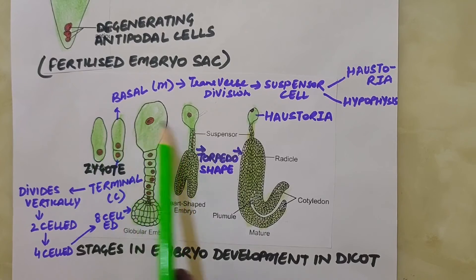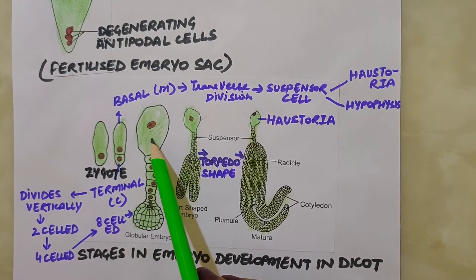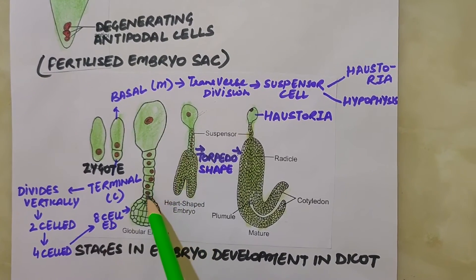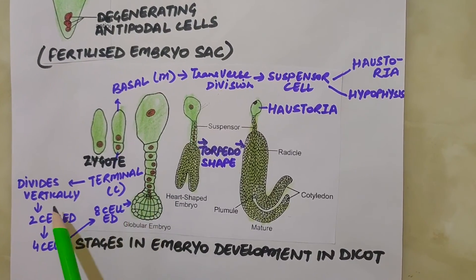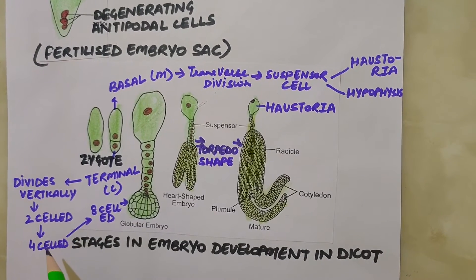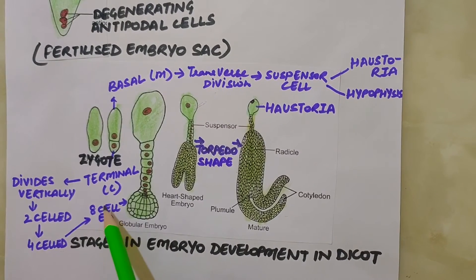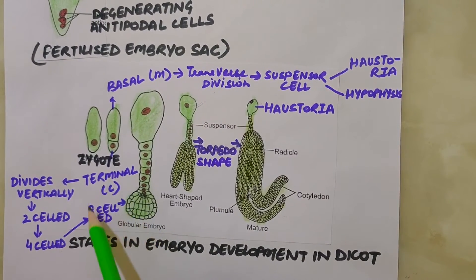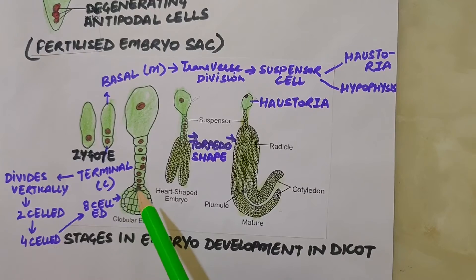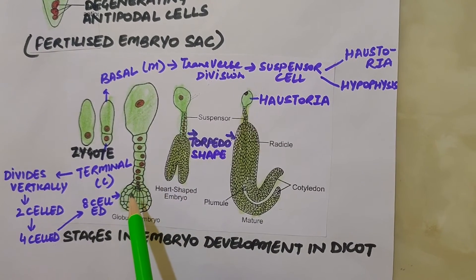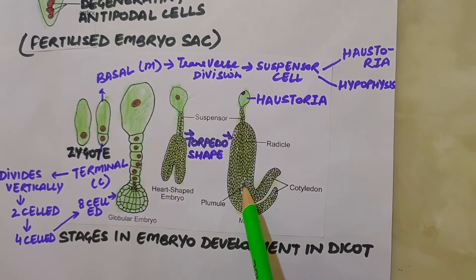The basal cell divides transversally to form 7–10 suspensor cells. The uppermost suspensor cell forms the haustorium and the lowermost forms the hypophysis. The terminal cell divides vertically to form a 2-celled pro-embryo, which further divides into a 4-celled and then 8-celled pro-embryo. These 8 cells arrange themselves into 2 tiers — one tier forms the radicle and the other forms the plumule, giving rise to root and shoot respectively. The zygote thus gives rise to a pro-embryo and subsequently globular, heart-shaped and mature embryo forms.